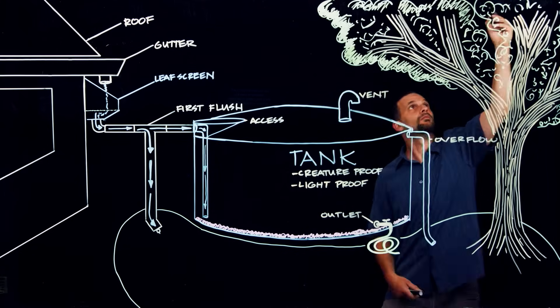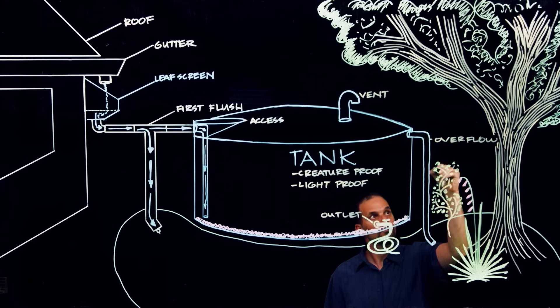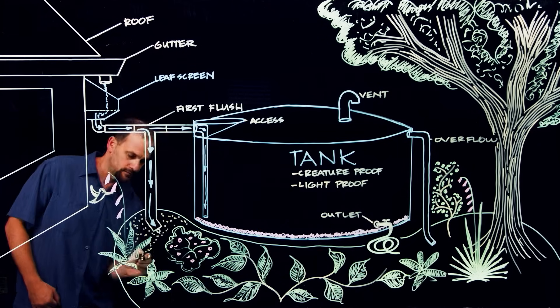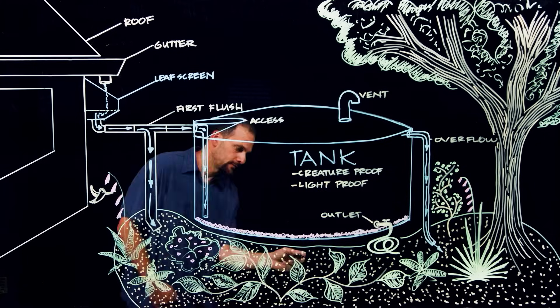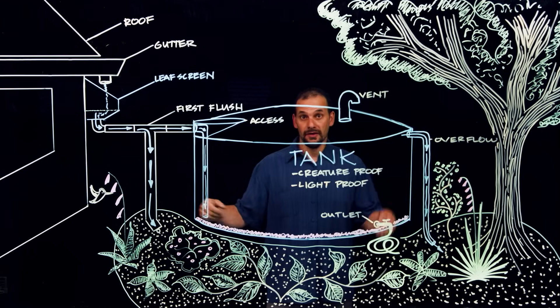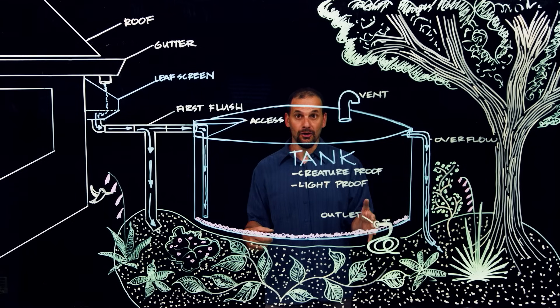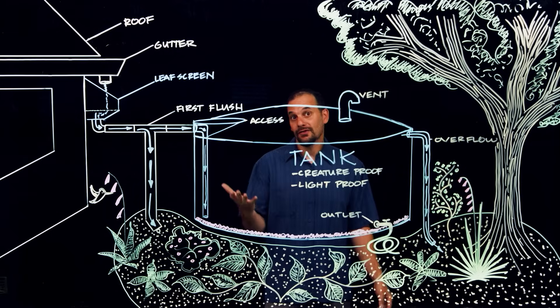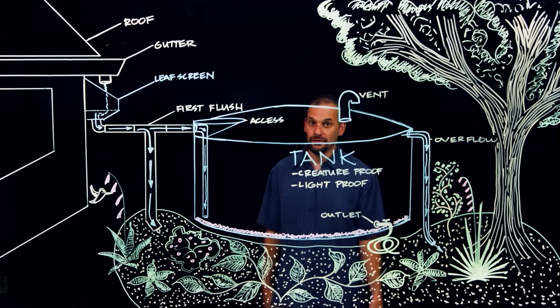So, the water tank should not just exist in isolation because at some point it's going to overflow, and that overflow can be utilized as a resource. Now, I drew the tank's first flush diverter, the overflow, and the outlet here all watering this sunken basin. But you could have this water hooked up to supply a lot of uses.